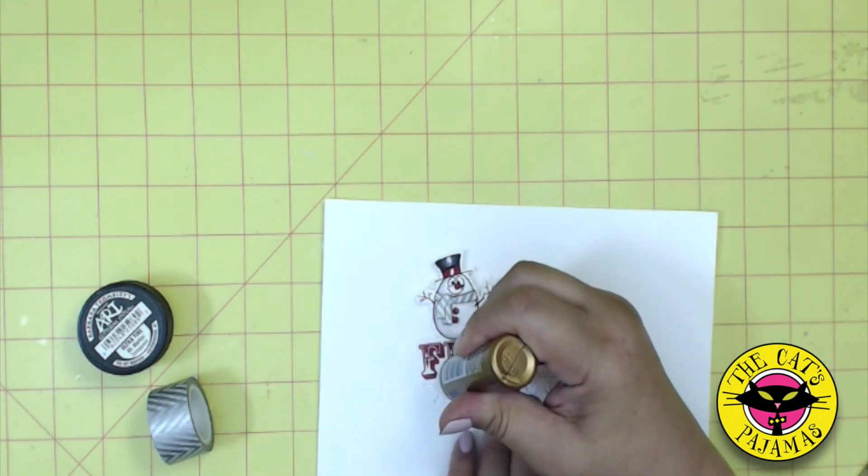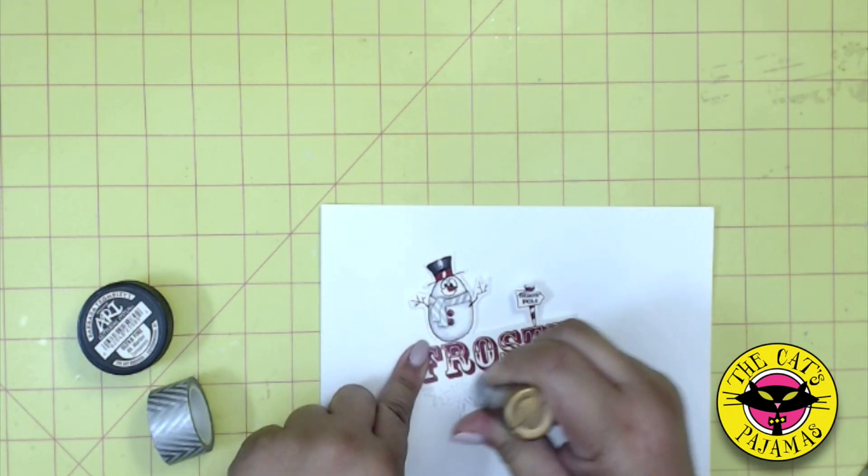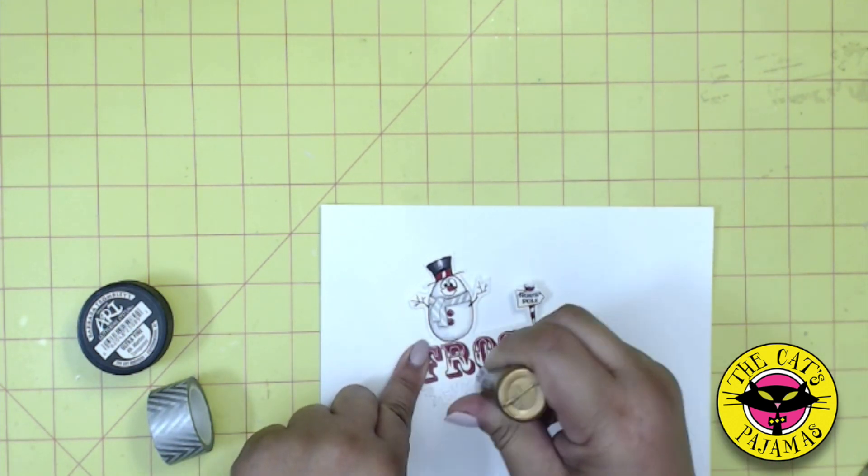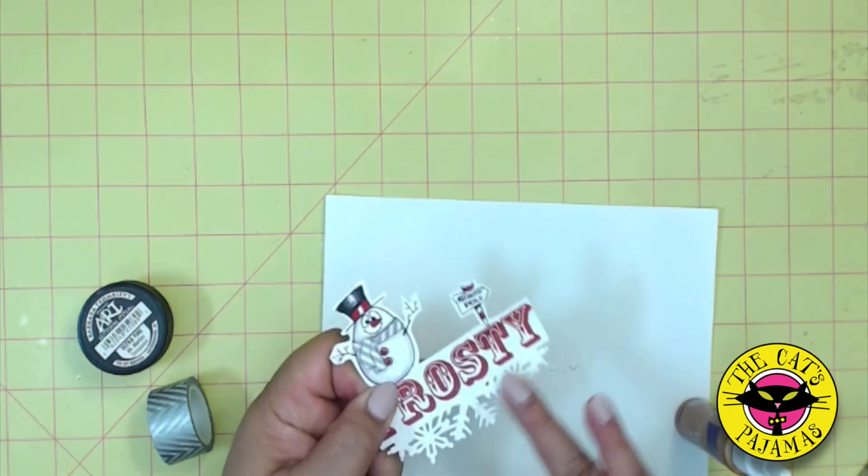Now let's add a little sparkle. I'm using this glitter called Martini. And it looks a lot like snow with just a touch of sparkle. So we'll add some to the top of the pole and to the snowflakes at the bottom.